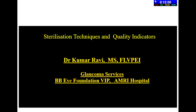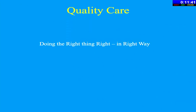The next talk is by Dr. Kumar Ravi on sterilization techniques. In continuation, I will speak on sterilization techniques and quality indicators. Quality care means doing the right thing the right way. When we talk of sterilization, a lot depends on personal choice and economic viability. The aim of sterilization is complete killing of all microbes including spores. The process has four parts: cleaning, assembling and packing into the sterilizer, storing and distribution, and documentation.